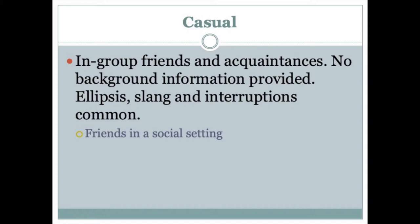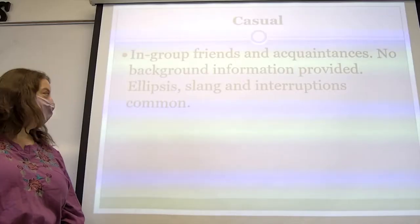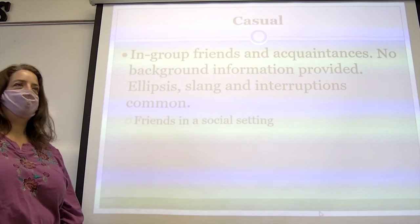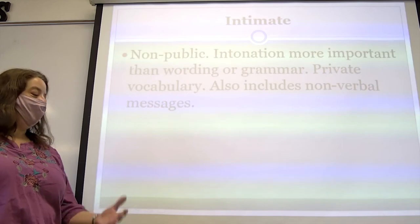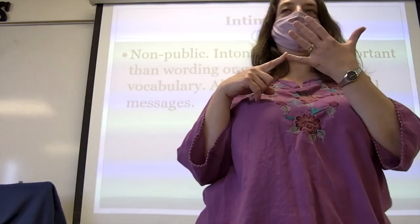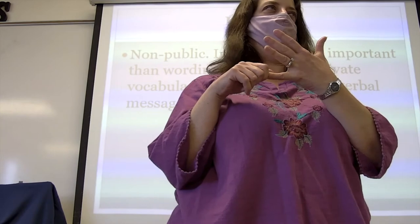So: frozen is text that never changes, formal is somebody giving a speech one way, consultative is back-and-forth conversation between an expert and apprentice or teacher and student. Next we have casual. Casual is you and your friends in the hallway, sitting around the lunch table, your family at dinner. You don't have to give all the background information when you're talking to your friends. Ellipsis — saying half a sentence and letting it hang — slang, and interruptions are all common and acceptable.